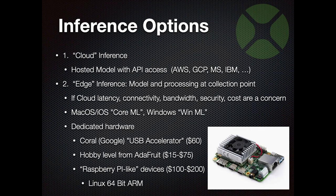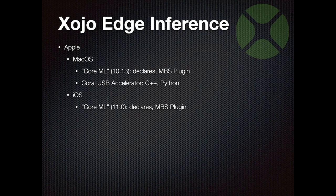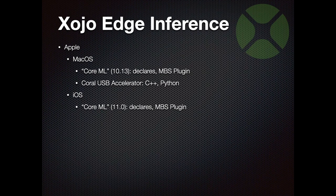I haven't been able to build a Sojo app for this yet, but hopefully soon. For macOS, starting with 10.13, Core ML is built in. You could use declares to access it, but the easiest thing is to use Christian's Monkey Bread Software plugins, which I'll demonstrate shortly. The USB accelerator will also run on the Mac. It comes with C++ libraries and Python, and what I do to run from Sojo - since I couldn't afford to do a plugin - is use a shell and just make Python calls from Sojo, which works quite well.